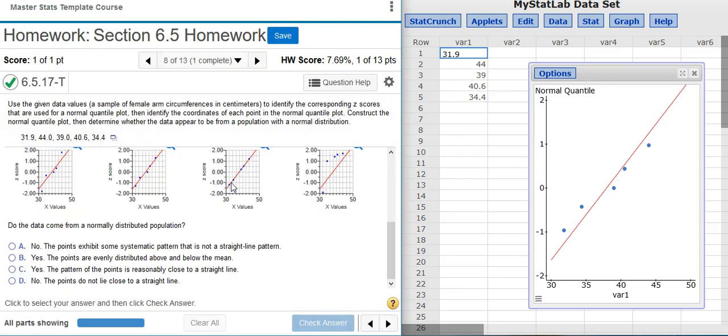And now the last part of the problem asks, do the data come from a normally distributed population? Well, in our normal quantile plot what we see are points that more or less conform to that red line. Yes, it's not exact. Yes, there's some deviation of the points from the red line. But for the most part what we're looking for is a general trend.